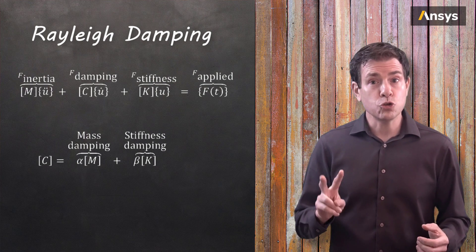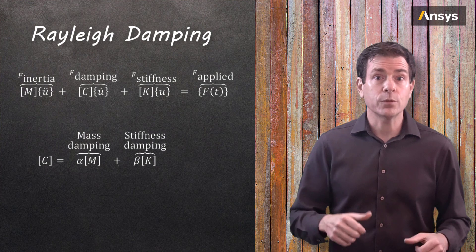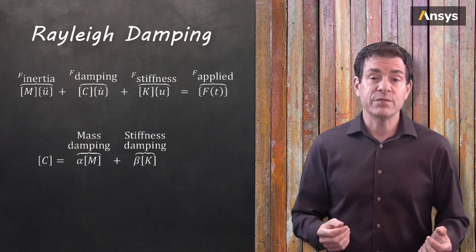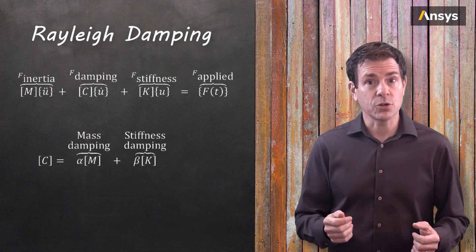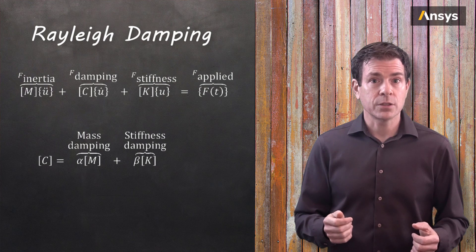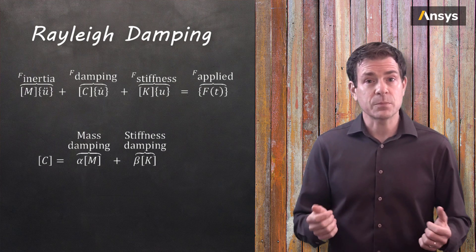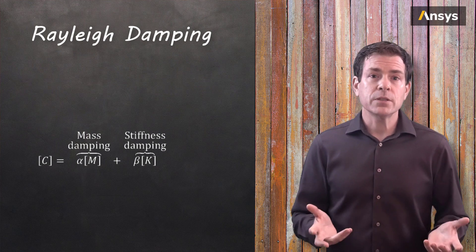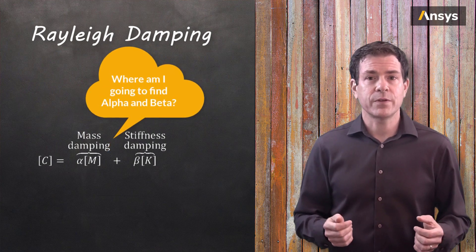For a given problem, the user could specify two real values, one for alpha and one for beta. This results in viscous damping that is proportional to the linear combination or some of the mass and stiffness matrices.